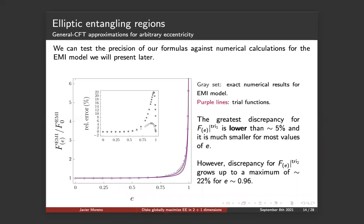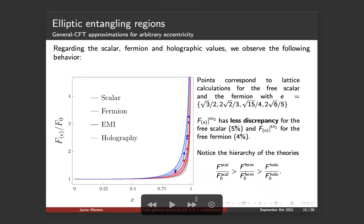So the exact F of E will be an extremely complicated function depending on the eccentricity and on many details of the theory. But the good thing from this trial function is that we can try to parameterize them with only three parameters of each of them. We test the precision of our formulas against numerical calculations for the EMI model. We show the gray set here that is the exact numerical results for the EMI model and the two trial functions, with the difference between them colored in slightly purple. We can check that the greatest discrepancy between the trials and the numerical computation is lower than five percent, and it's much smaller for most values of the eccentricity.